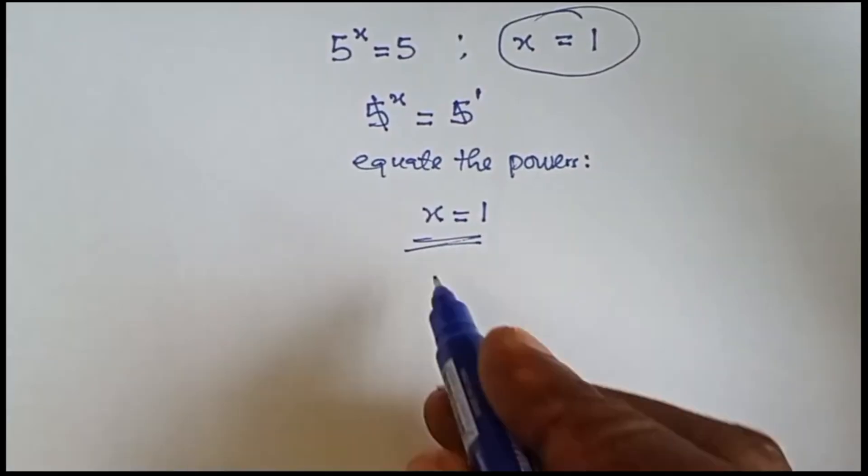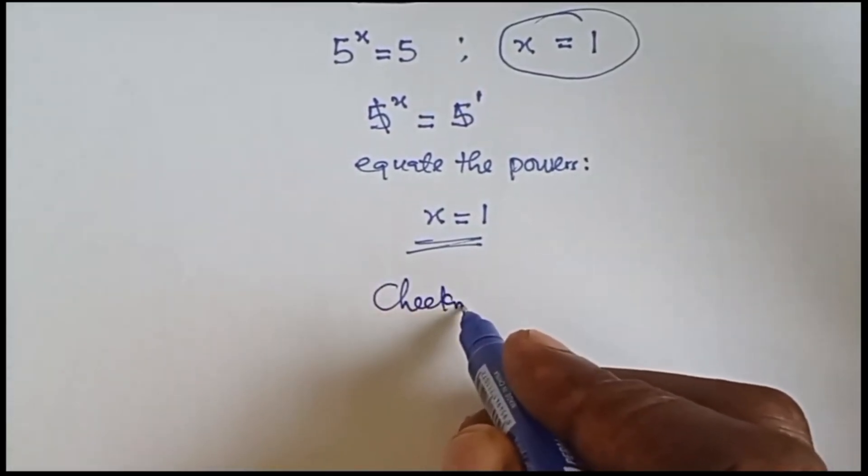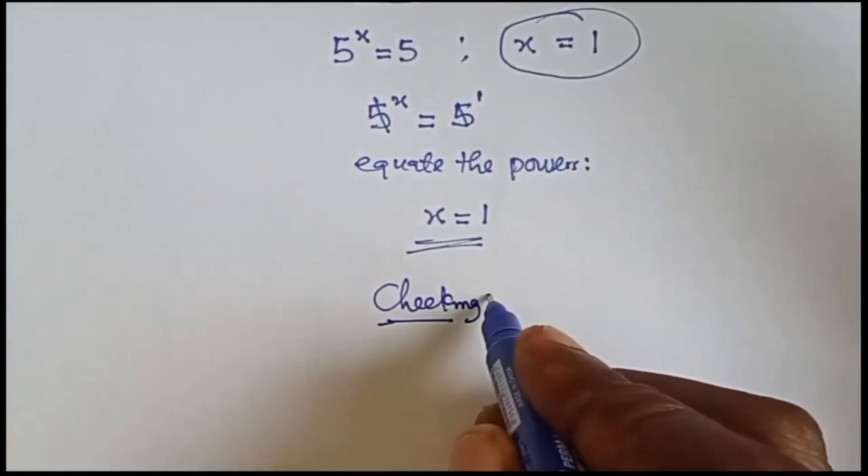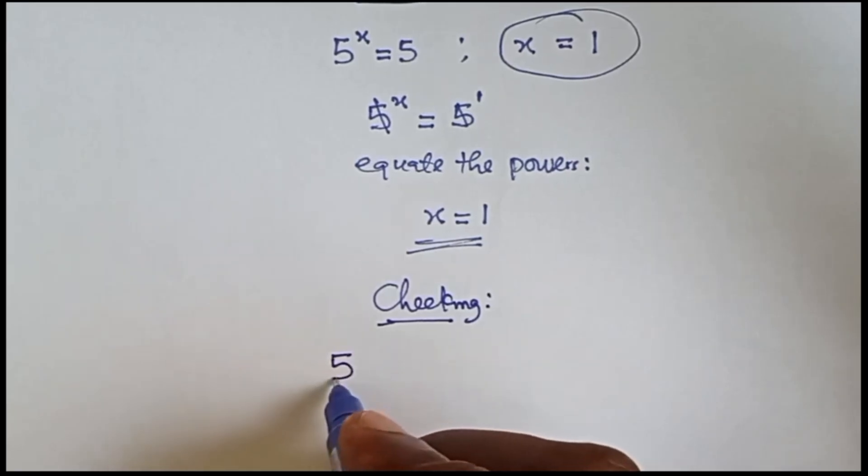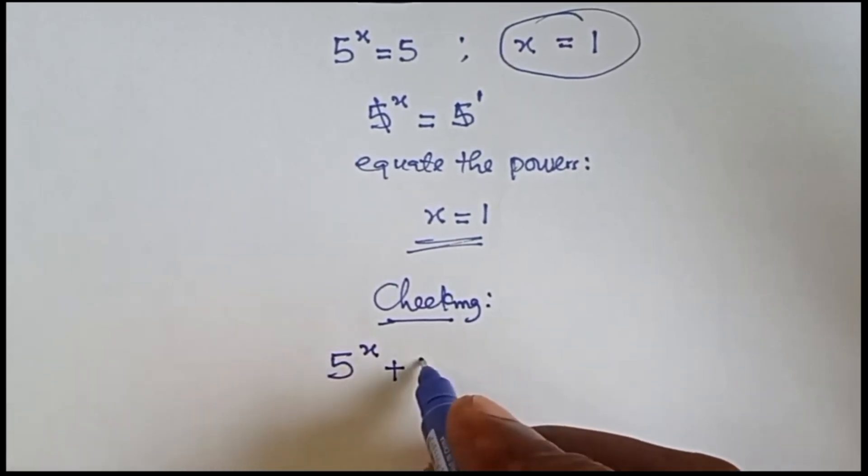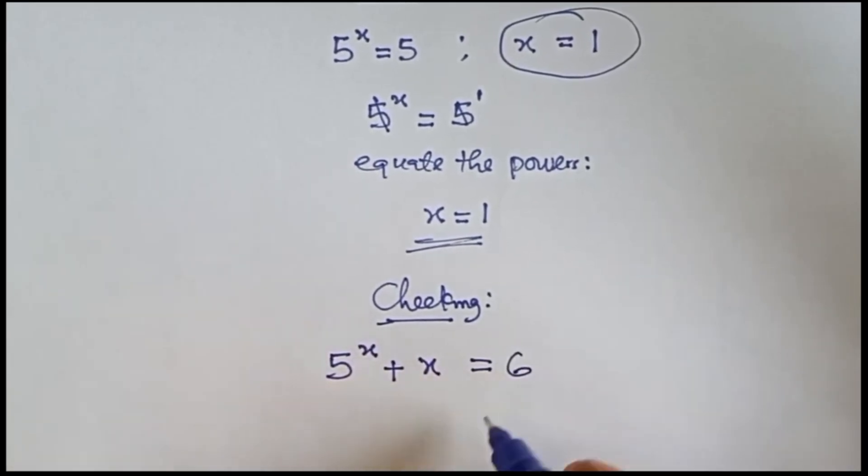Now let's check. We have 5 raised to the power x plus x equals 6. So we substitute x equals 1: 5 raised to the power 1 plus 1 equals 6.